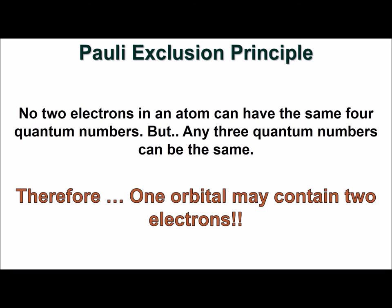A simple way of looking at quantum numbers is to think of it as an electron's address. The four numbers unique to each electron tell you where that electron can be found in an atom.